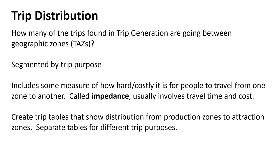We start with Transportation Analysis Zones (TAZs), then split trips by purpose — work trips, shopping trips, and so forth. In the classic trip distribution system, we also look at impedance: how hard it is to go from one place to another. Some of it is distance, some of it is travel time.